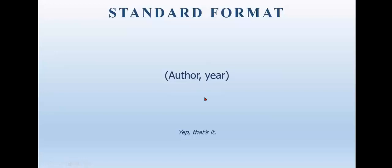This is the standard format for an APA in-text citation. It's in parentheses. It has the author's last name, a comma, a space, and the year. And then you close the parentheses. Of course, if that's all it took, we'd be done right now. There are other things I have to tell you, but that's the basic.